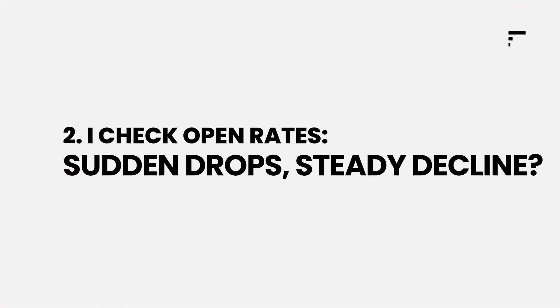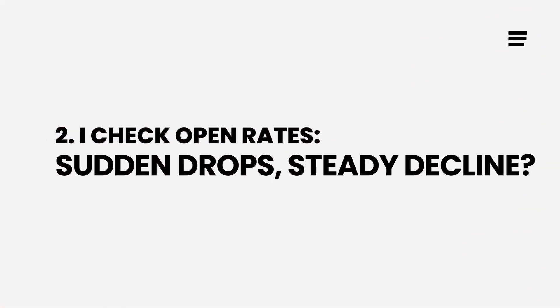Number two: I check open rates for any sudden drops or steady decline. The way your open rate changes shows you how your performance changes. If you notice a sudden drop, something might have happened recently — for example, you landed on the blacklist. If there is a steady decline, you might be doing something wrong for quite some time, which means your reputation could have also been going down for quite some time. Either way, it's time to react.